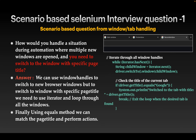The first question: how would you handle a situation during automation where multiple new windows opened and you need to switch to the window with a specific page title? Consider three windows — main window, first window, and second window — and you have to switch to the second window with page title 'Second Window.' We can use window handles, but to switch to a specific page title we need to use an iterator and loop through all windows, equaling the page title using the equals() method.